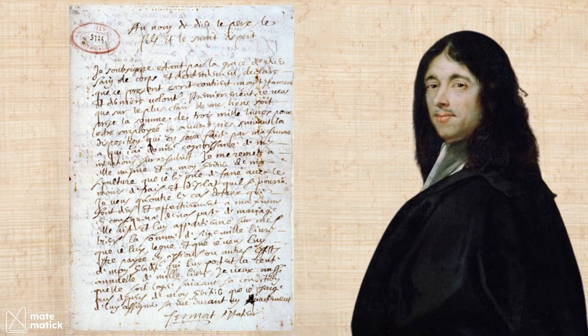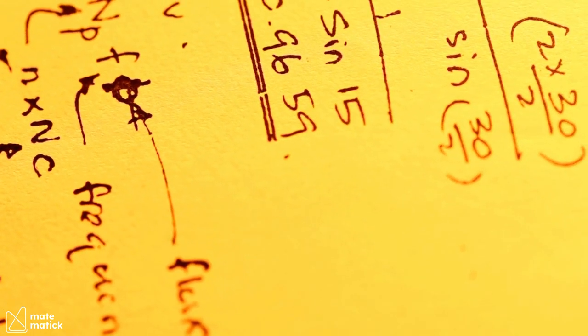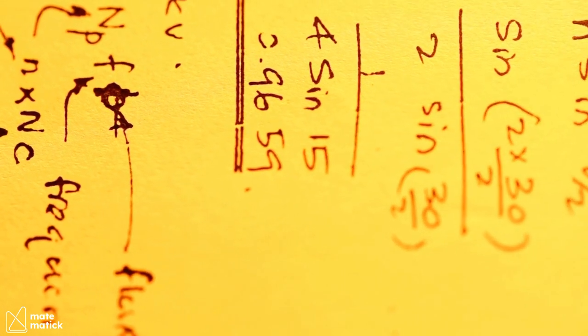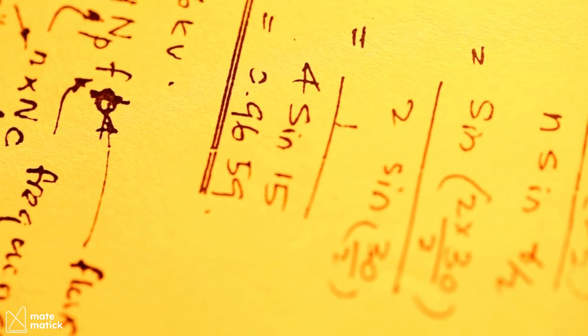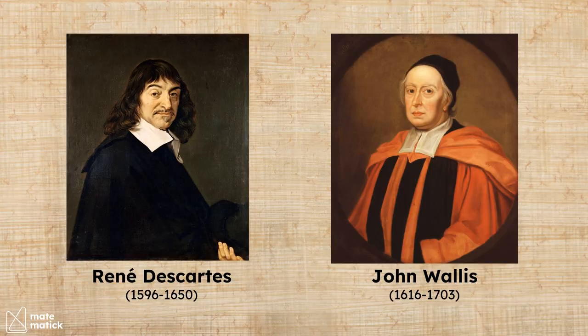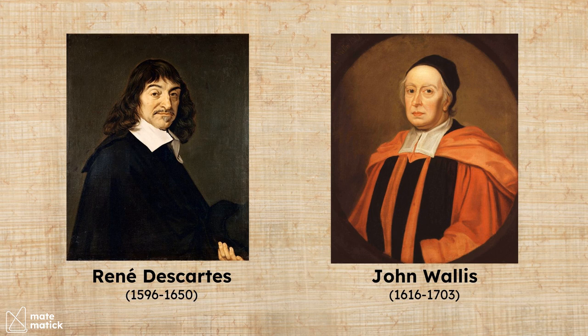He sent his math ideas in letters to friends, sometimes without full proof. He contributed a lot to geometry, probability, numbers, and calculus. But he kept his work pretty private, leading to disagreements with other mathematicians like Descartes and Wallace.